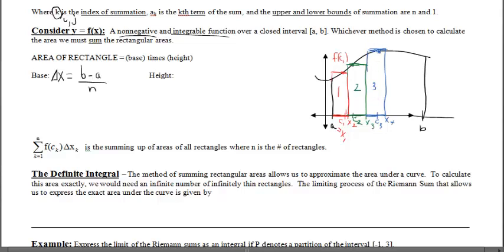The height of rectangle 3 is determined by c-sub-3, so the height is the functional value at c-sub-3. The height of rectangle 2 is the function evaluated at c-sub-2. This could continue — rectangle 4, 5, 6, 7, 8, etc. At some point I'll generalize.